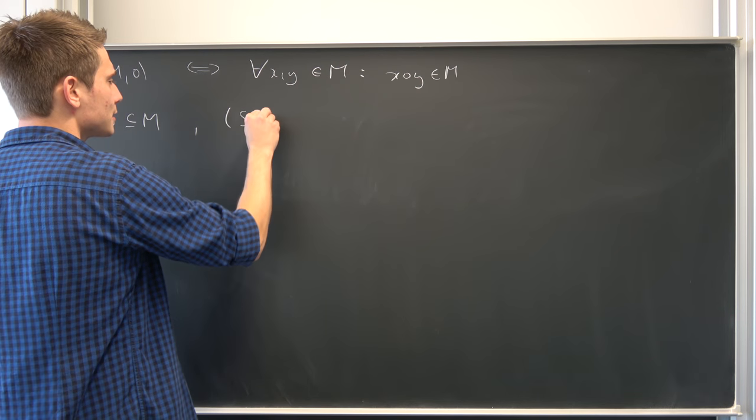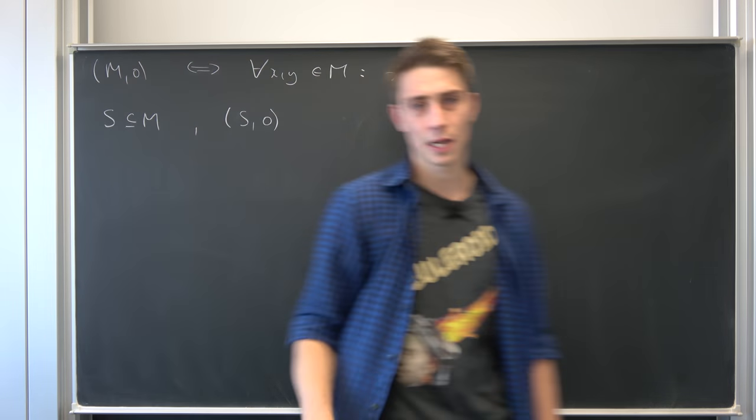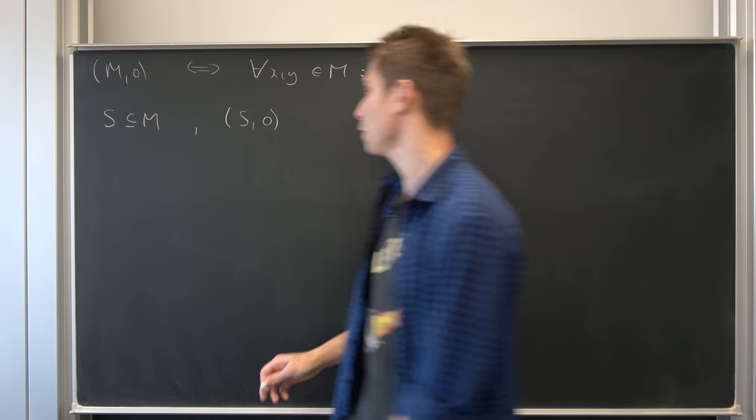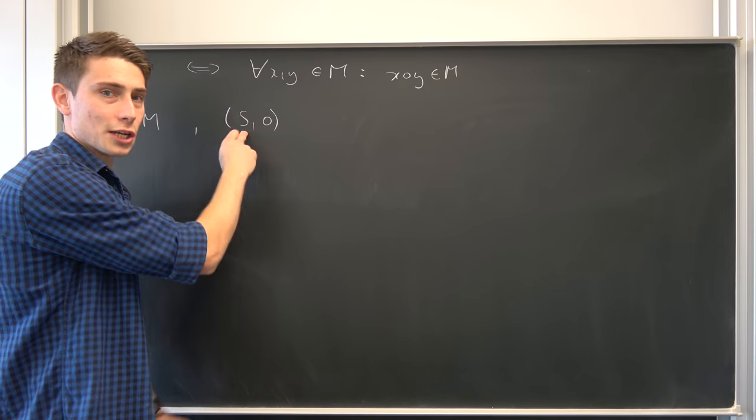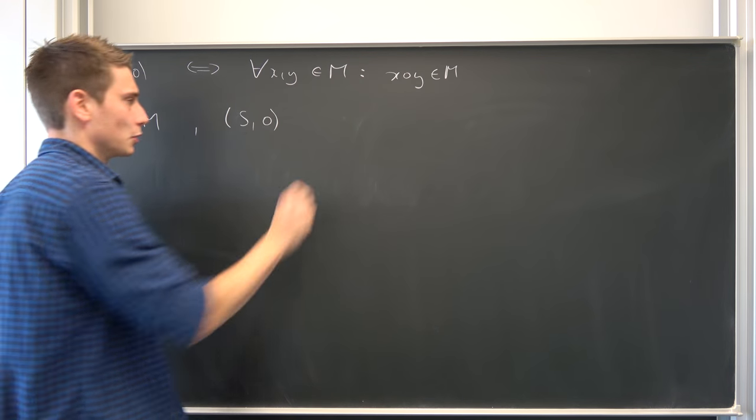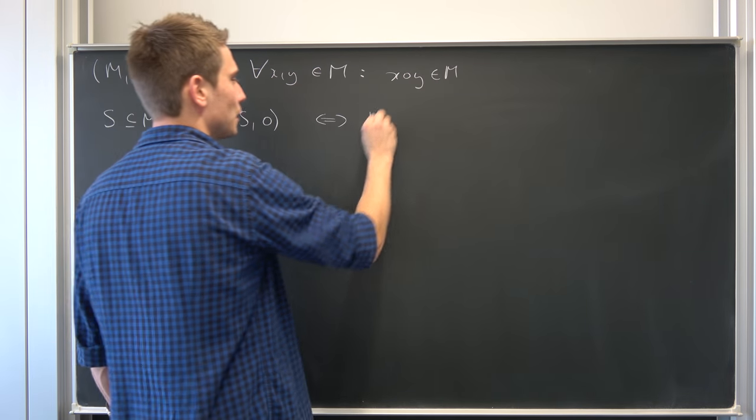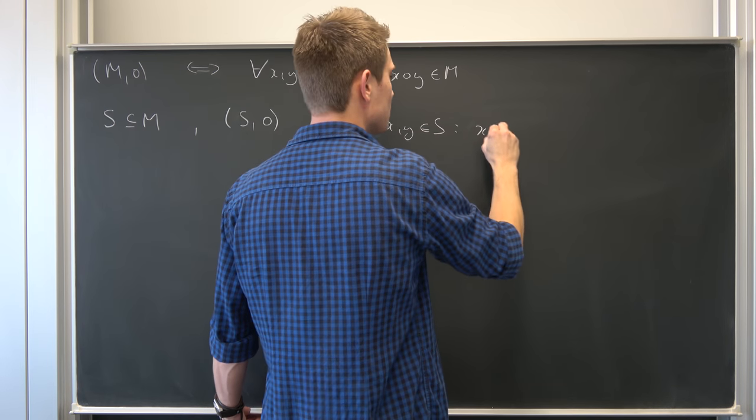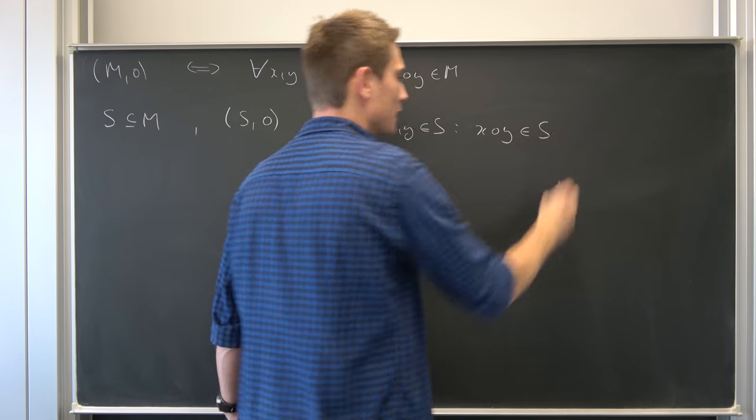So let's consider S and circle once again and we call this thing right here a sub magma, this pair, if S is closed under the operation of its mother magma right here. That means for all x and y element of S, we have that x in composition with y is once again element of S.